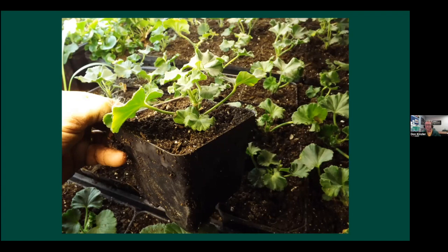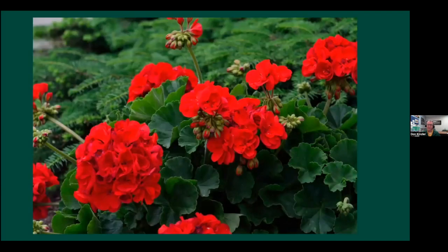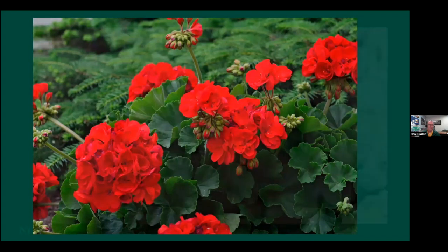We pot the rooted cuttings into four-inch greenhouse-type pots and grow them under fluorescent lights all winter. By the following spring they produce greenhouse-quality geraniums. We usually don't throw out the original mother plant either — we overwinter those too. From one mother plant in late summer/fall you can get dozens of new geranium plants.